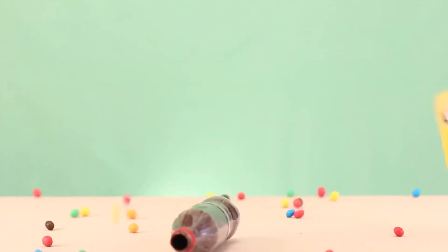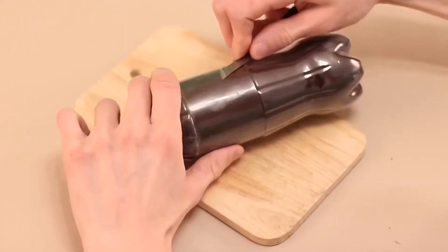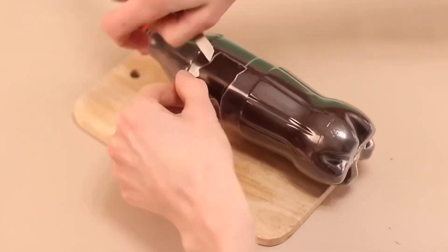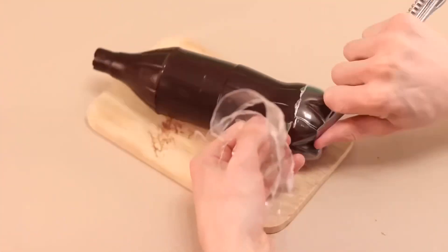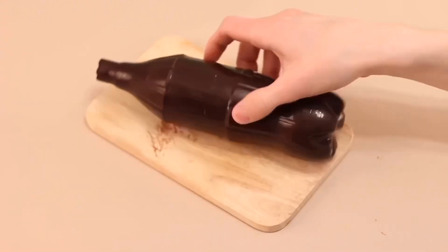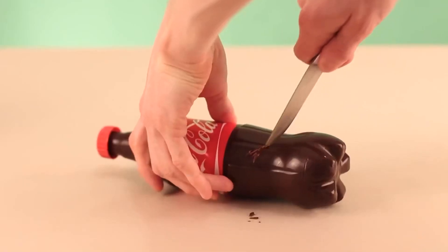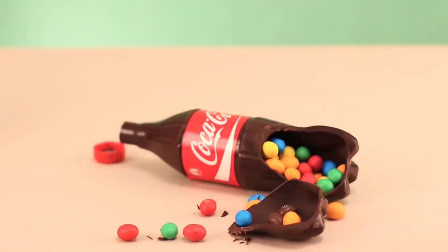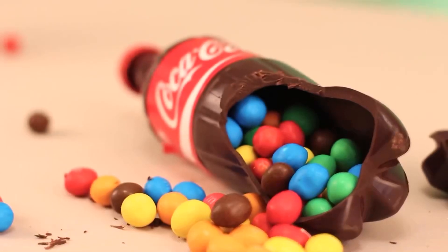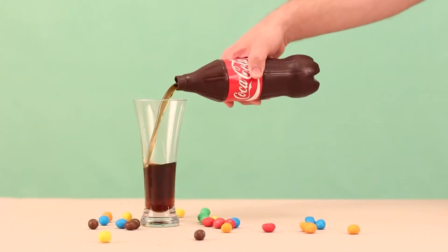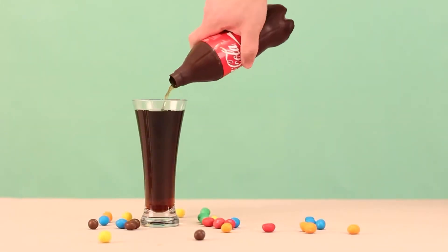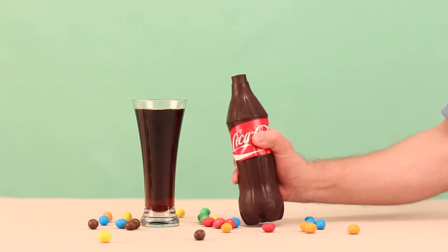We take it out of the refrigerator and put M&Ms inside. We remove the plastic mold with the stationary knife. We paste the label and install the lid on top. And now, let's take a look at the cross section. By the way, instead of sweets, we can pour real cola into it. And the bottle is empty and enjoy delicious chocolate.